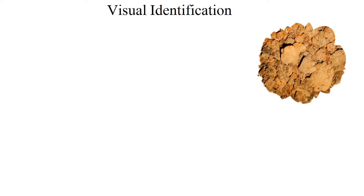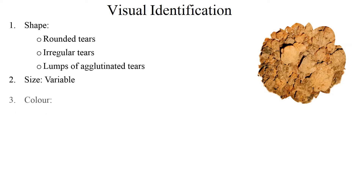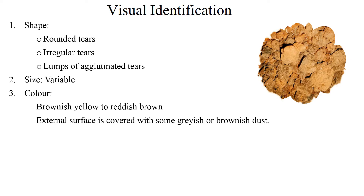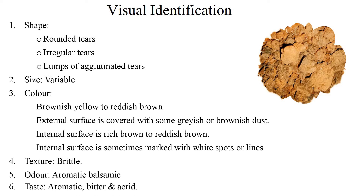Visual Identification. Shape: Myrrh occurs as rounded tears, irregular tears, or lumps of agglutinated tears of variable size. Color: Myrrh is brownish yellow to reddish brown. The external surface is covered with grayish or brownish dust. The internal surface is marked with white spots or lines. Myrrh is brittle in nature, having an aromatic balsamic odour and aromatic bitter acrid taste.